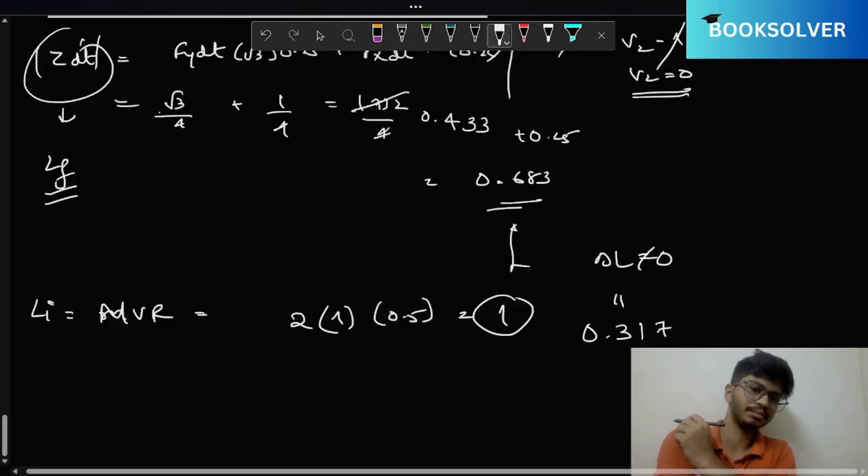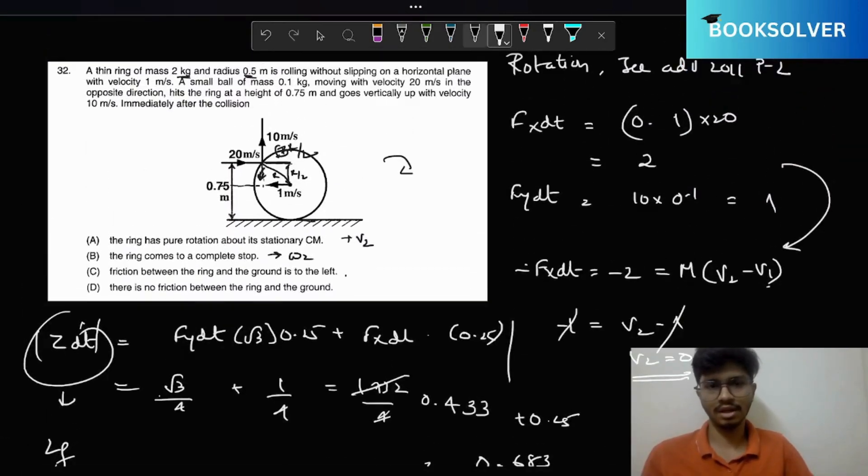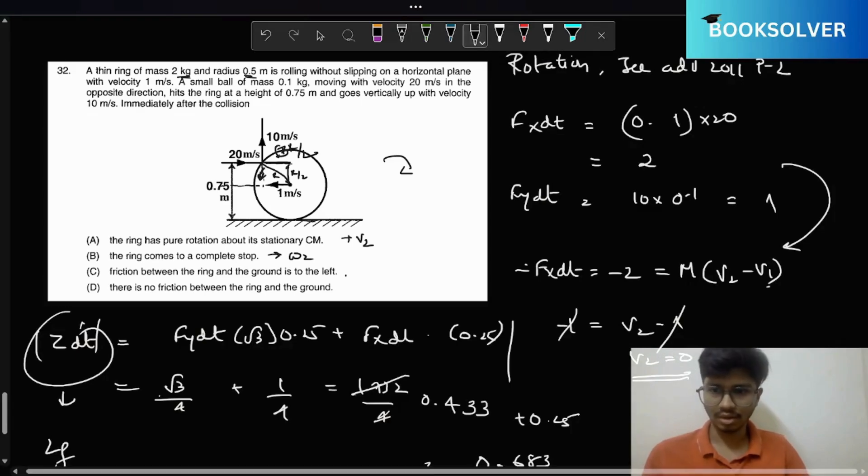This implies that omega 1 minus omega 2 is also not equal to 0, so omega 2 is not equal to 0. So from here we can say that option B is wrong.